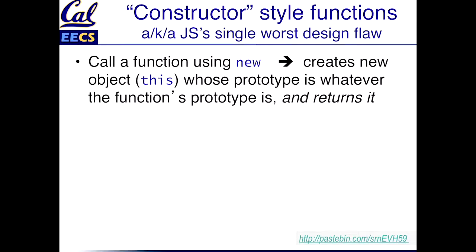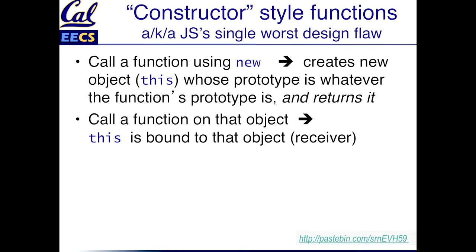So what are these constructor-style functions? Here's why it's considered JavaScript's single worst design flaw. If you write a function a certain way and call it using the new keyword, the result is that it will create a new object. The prototype for that object is whatever the function's prototype is, and it returns the new object. This should sound a lot like what happens when you call a constructor in a normal object-oriented language that has classes. Inside those functions, the value of this will refer to the object that you called the function on, kind of like the receiver in Ruby.